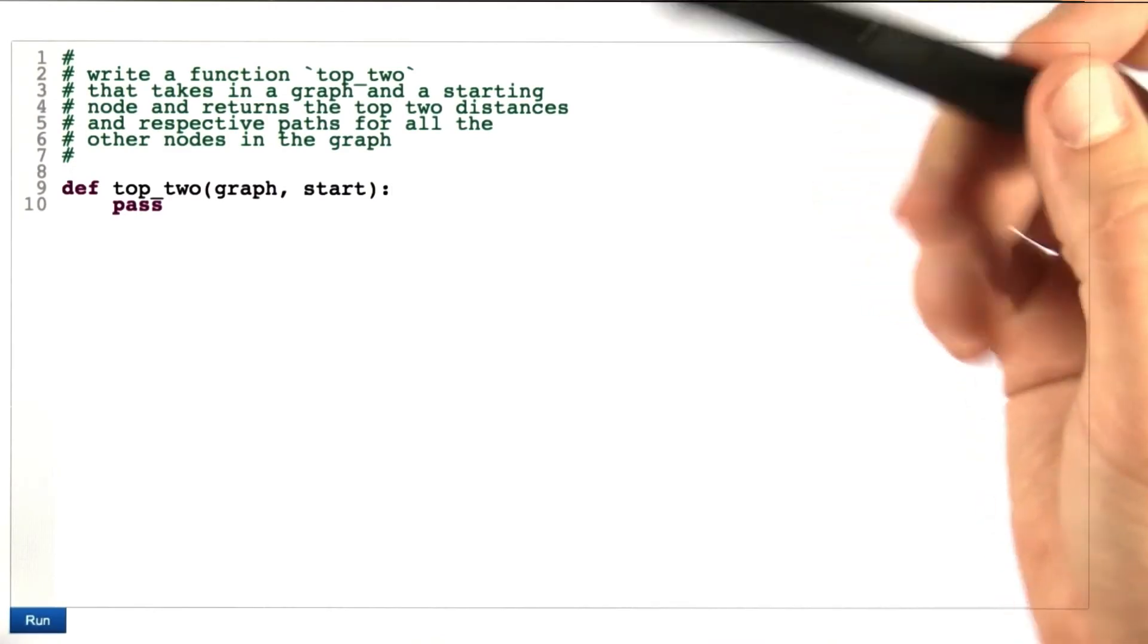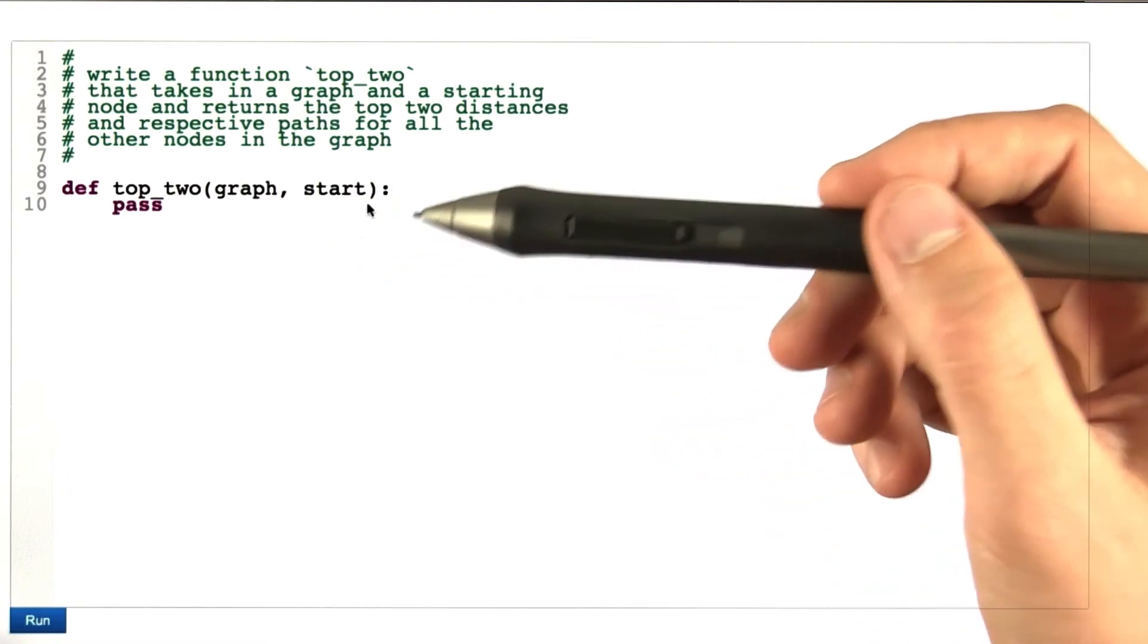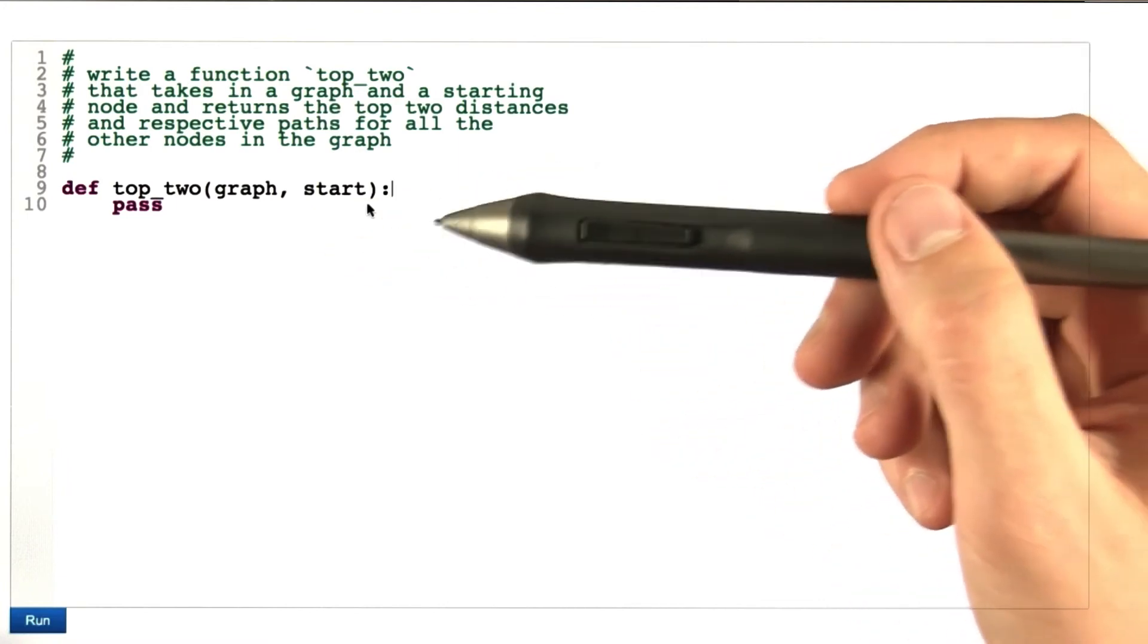Now, with that idea, in this assignment, we want you to take a graph and a starting node and calculate the top two paths to every other node in that graph.